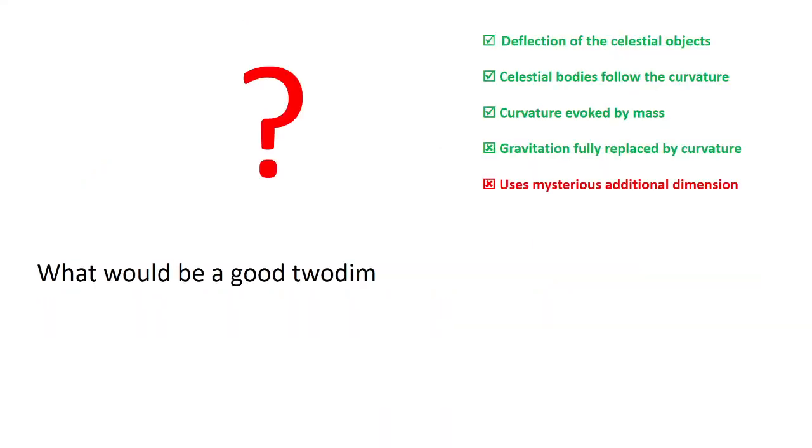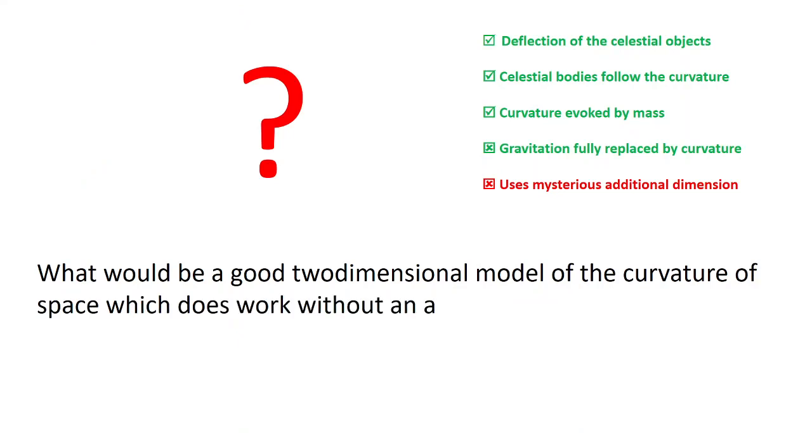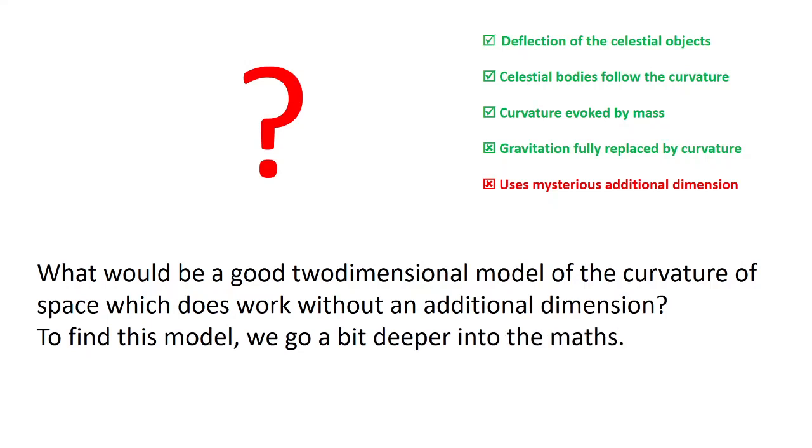The rubber blanket model from above would look like this. However, this wouldn't be a good model for the curved space. What would be a good two-dimensional model of the curvature of space, which does work without an additional dimension? To find this model, we go a bit deeper into the maths.